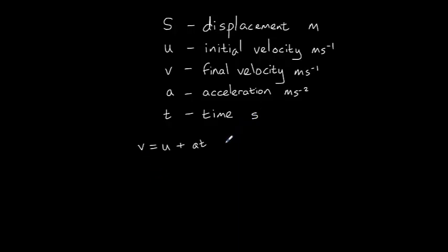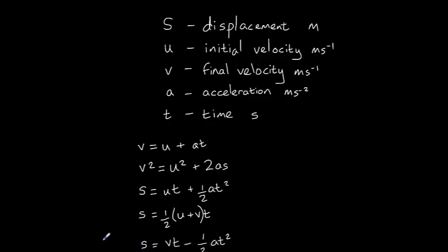V equals U plus AT. The final velocity is equal to the initial velocity plus acceleration multiplied by time. V squared equals U squared plus 2AS. S equals UT plus a half AT squared. S equals a half multiplied by U plus V multiplied by T. And the fifth equation, which it is worth being aware of, S equals VT minus a half AT squared.